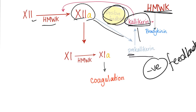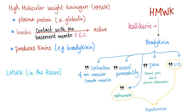High molecular weight kininogen will activate both factor 12 and factor 11. Prekallikrein is converted into kallikrein, causing high molecular weight kininogen to be converted into bradykinin. High molecular weight kininogen — is it active? Yes, it activates factor 12 and produces bradykinin. If it's active, it's a protein — specifically a plasma protein. What kind of plasma protein? It's a globulin.